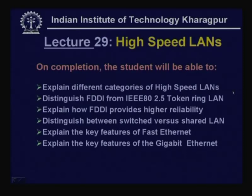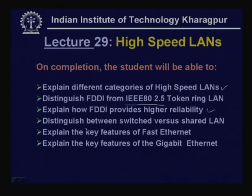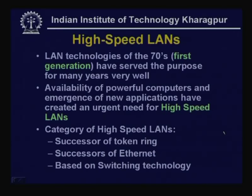On completion, students will be able to explain different categories of high speed LANs, distinguish FDDI from IEEE 802.5 token ring LAN, and explain how FDDI provides higher reliability compared to IEEE 802.5. They will also distinguish between switched versus shared LAN, explain the key features of fast Ethernet, and explain the key features of gigabit Ethernet.